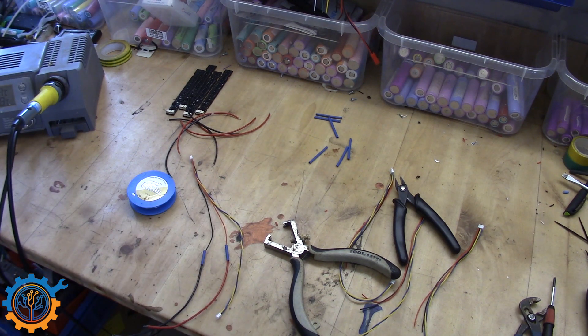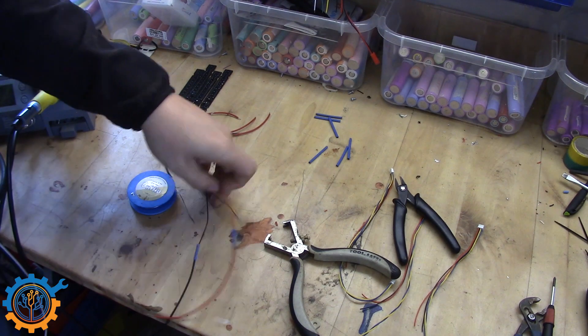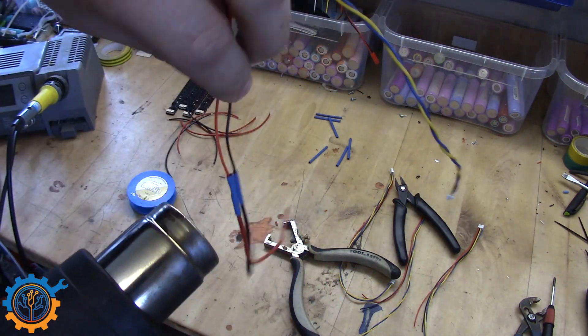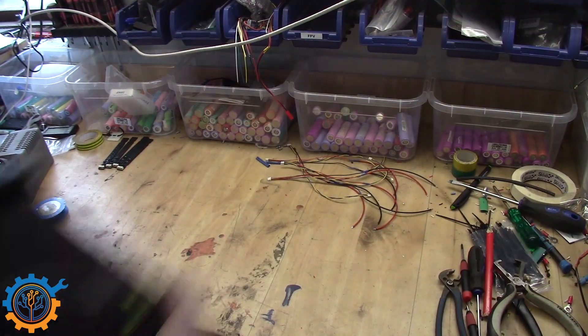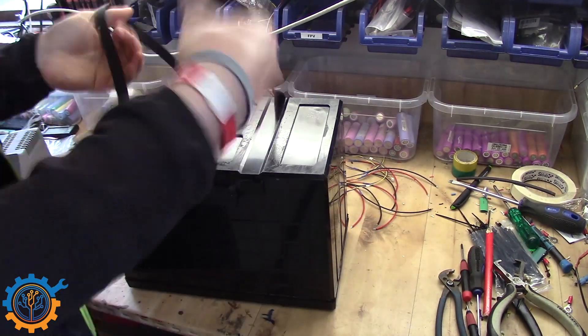When doing cables I'm using heat shrinks everywhere of course to make sure that everything is nice and tidy. All those cables would be on the inside of the box so that's not a big issue and you won't be seeing them.